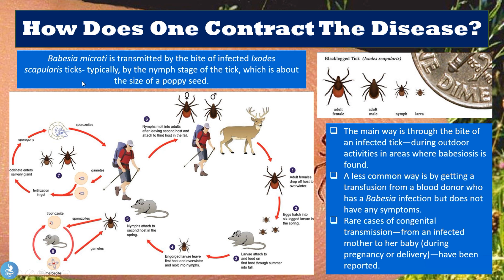Humans typically become infected by the nymph stage of this tick, which is about the size of a poppy seed. Looking at this image, we can see the adult female, the adult male, and the nymph and larval stages — shown next to a coin just to give an idea of how tiny these nymphs actually are. This is the stage in which most humans become infected. The main way to contract this disease is through the bite of an infected tick, usually during outdoor activities in areas where Babesiosis is found. A less common way is by receiving a blood transfusion from a donor who has the Babesia infection but has no symptoms.